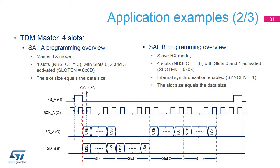This is another kind of full-duplex mode using the TDM protocol. Slot 1 is inactive or not used for sub-block A. Slots 2 and 3 are inactive for sub-block B. For both sub-blocks, the frame structure has four slots. Sub-block A will generate three samples per frame. Sub-block B will receive two samples per frame.